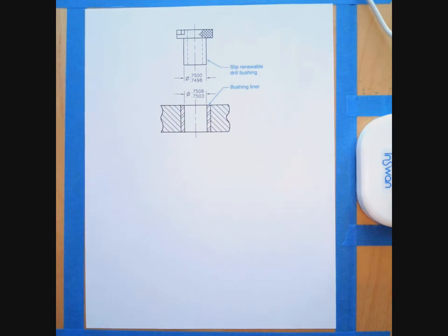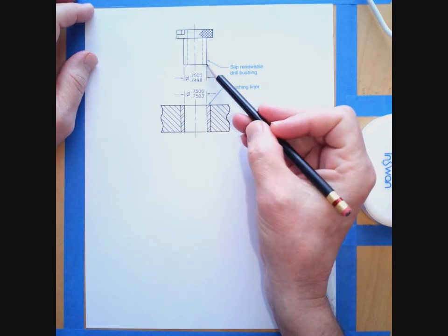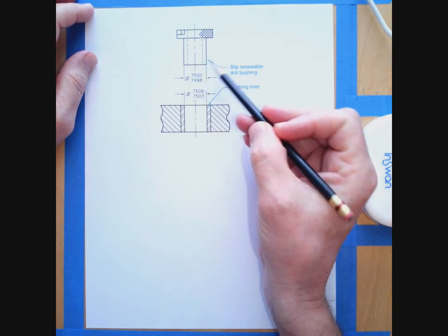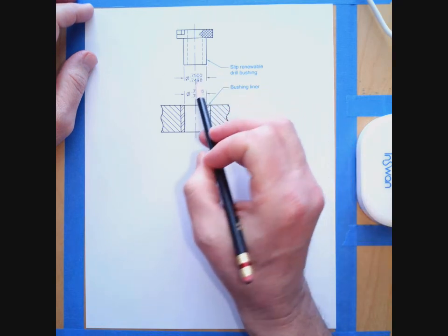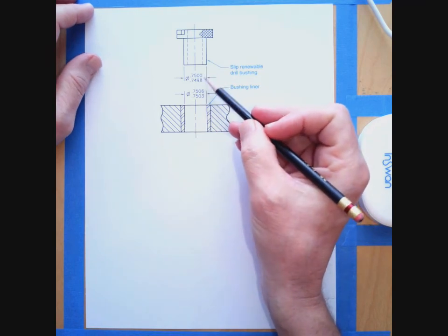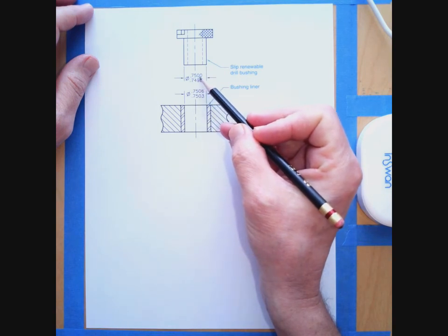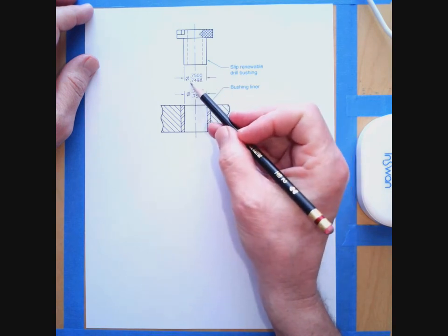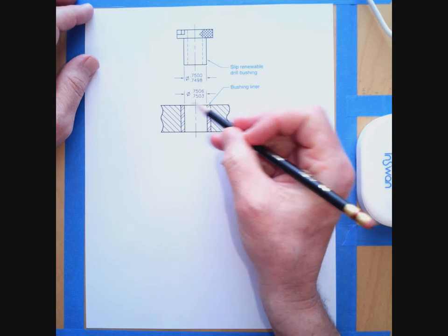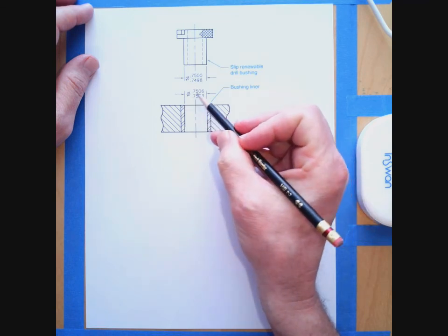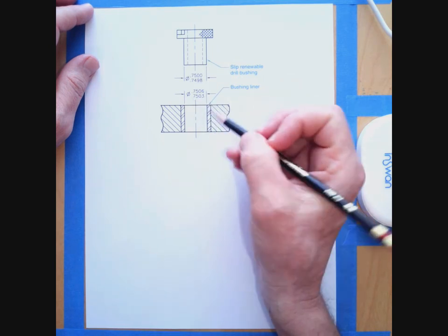In the first example for clearance fits, we have two parts. We have a positive feature — the pin, or in this case a bushing — going into a bushing liner. From the limits of size for the bushing, we have a maximum size of 0.75 and a minimum size of 0.7498 (in inches). For the bushing liner, we have a maximum diameter of 0.7506 and a minimum diameter of 0.7503.